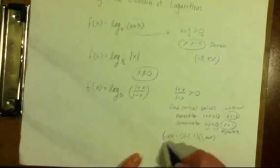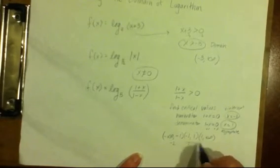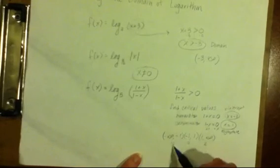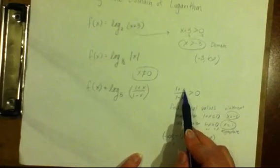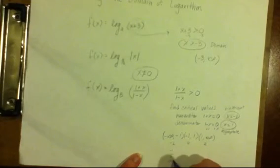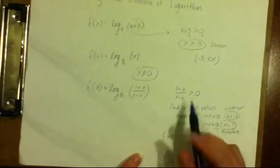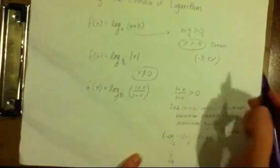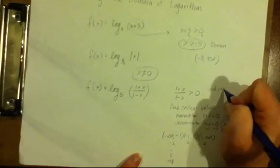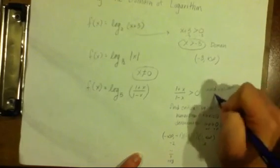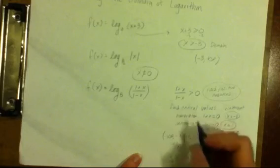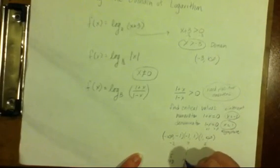So now we need to test our intervals. So we would plug in a number in each interval to test and go up to our original problem, plug in a negative 2. 1 plus a negative 2 is a negative 1, and then 1 minus a negative 2 would be a positive 3. So that one's obviously negative, which is not greater than 0. We need positive answers. So when we plug in 0, we end up with 1 over 1, which is a positive answer.